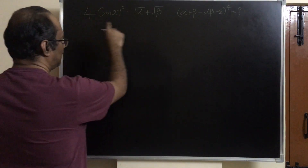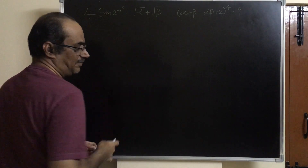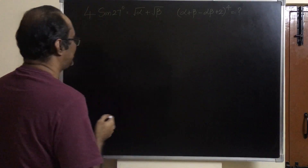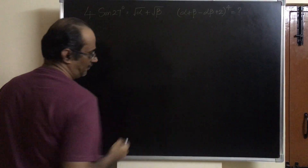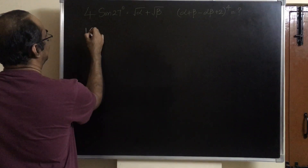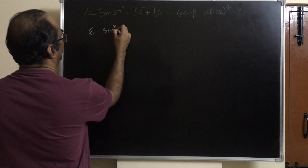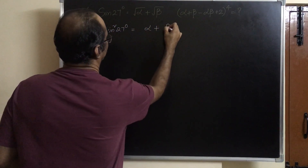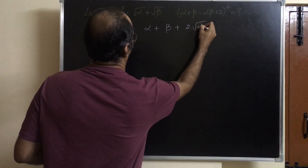Let us take 4 sin 27 equals square root of alpha plus square root of beta, and try to square it on both sides to see if we can get the values of alpha plus beta and alpha beta separately. We will have 16 sin squared 27 degrees equals alpha plus beta plus 2 root alpha beta.